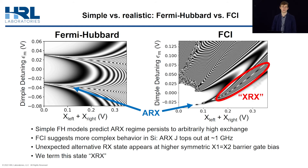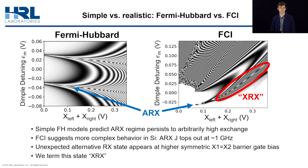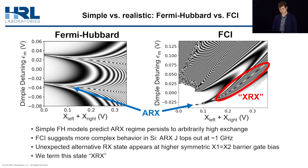Remember that Fermi-Hubbard predicts that the ARX regime persists to arbitrarily high exchange, but that doesn't really pan out when we go to FCI. Instead, FCI predicts that ARX tops out at around a gigahertz of exchange, and moreover that this state is isolated in bias space — just a small dot in the plot. This state would likely be difficult to access experimentally, as the voltage window is quite narrow.